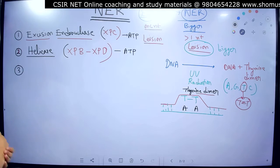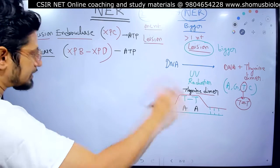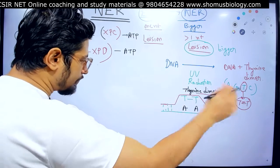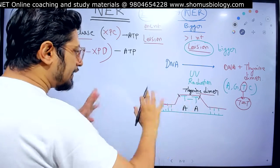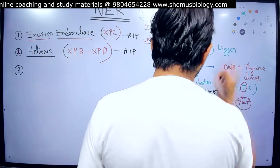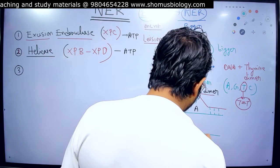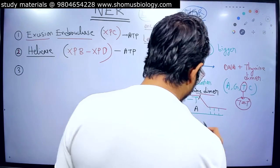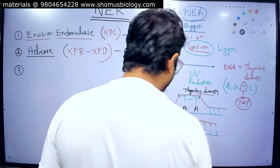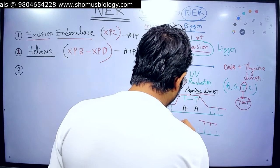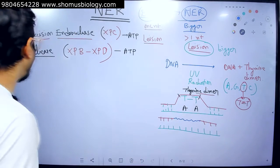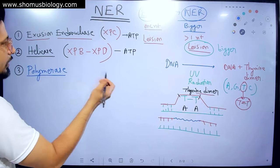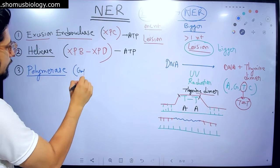Once the strands are separated, the third important step is that excision endonucleases bind and cleave the nucleotide fragments out from that region. When they cleave the fragments out, that area becomes blank — a gap is produced in the template strand region. This gap needs to be filled. The gap will be filled with new nucleotide sequences by DNA polymerase.